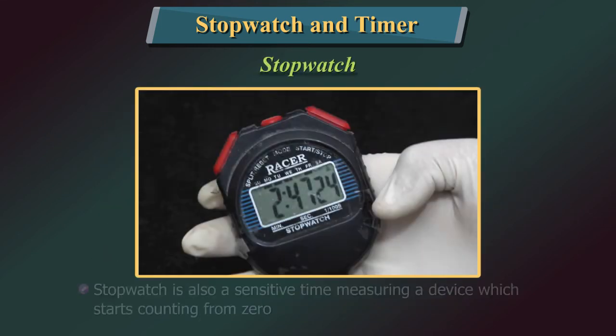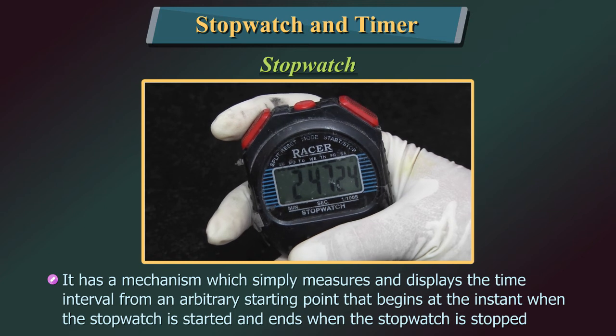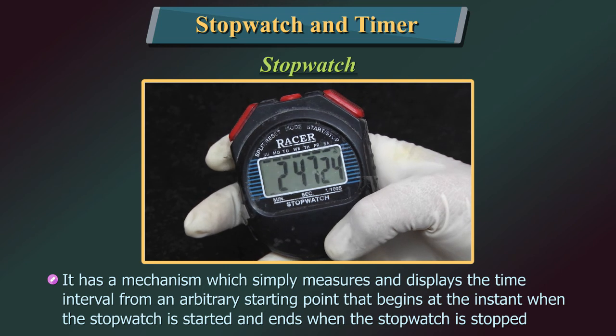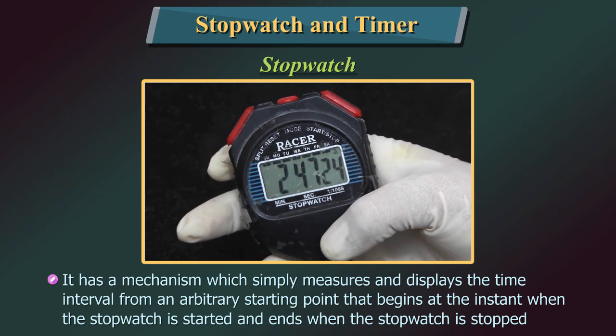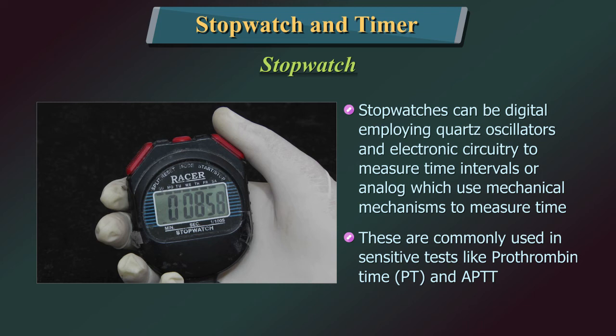A stopwatch is also a sensitive time-measuring device which starts counting from zero. It measures and displays the time interval from an arbitrary starting point that begins at the instant the stopwatch is started and ends when it is stopped. Stopwatches can be digital, employing quad oscillators and electronic circuitry to measure time intervals, or analog, which use mechanical mechanisms to measure time. They are commonly used in sensitive tests like Prothrombin Time (PT) and APTT.